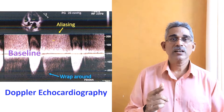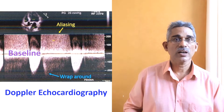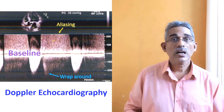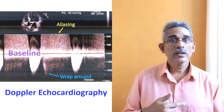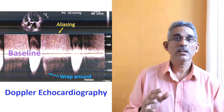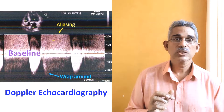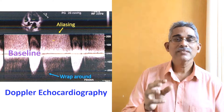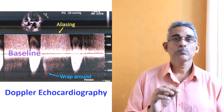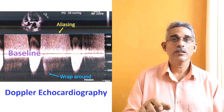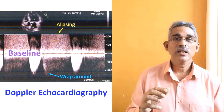By convention, when flow is away from the transducer it is color coded blue, and when flowing towards the transducer it is color coded red. In high-velocity flows, there is something known as variance — different regions have different velocities due to turbulence, and a variance is coded so that you have a mixing of colors. This is known as the mosaic pattern, which is typically seen in all high-velocity jets like aortic regurgitation and aortic stenosis.